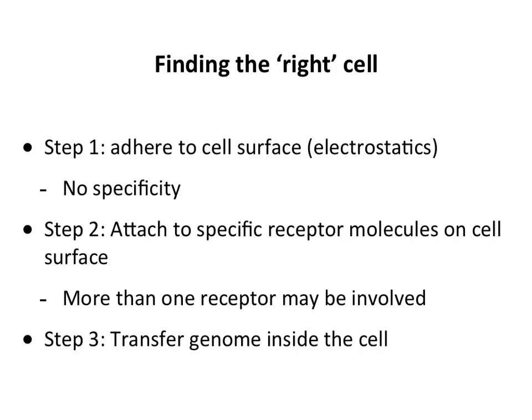Finding the right cell has two steps. First, viruses bump into a cell surface — there's no specificity here, they can sit momentarily and move on. The second step is finding a specific receptor on the surface. These receptors are molecules on the cell surface that the virus attaches to. There can be more than one receptor involved in getting a virus into a cell, and sometimes the same receptor works for different viruses, but there's always a very specific interaction between the virus and receptor.